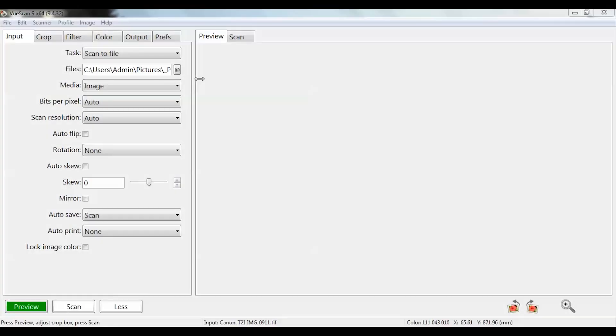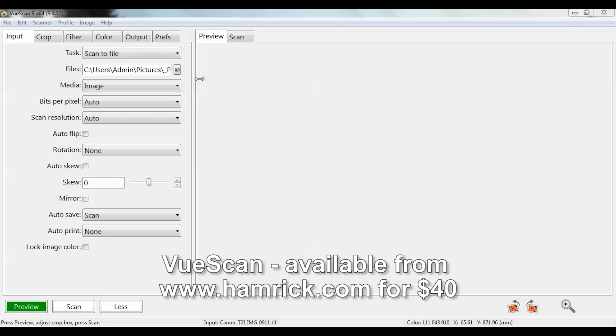Now comes the fun part to convert your digital images to positives. We're going to be using a program called ViewScan which is normally used to control scanners. It was developed by Ed Hamrick and is available for $40.